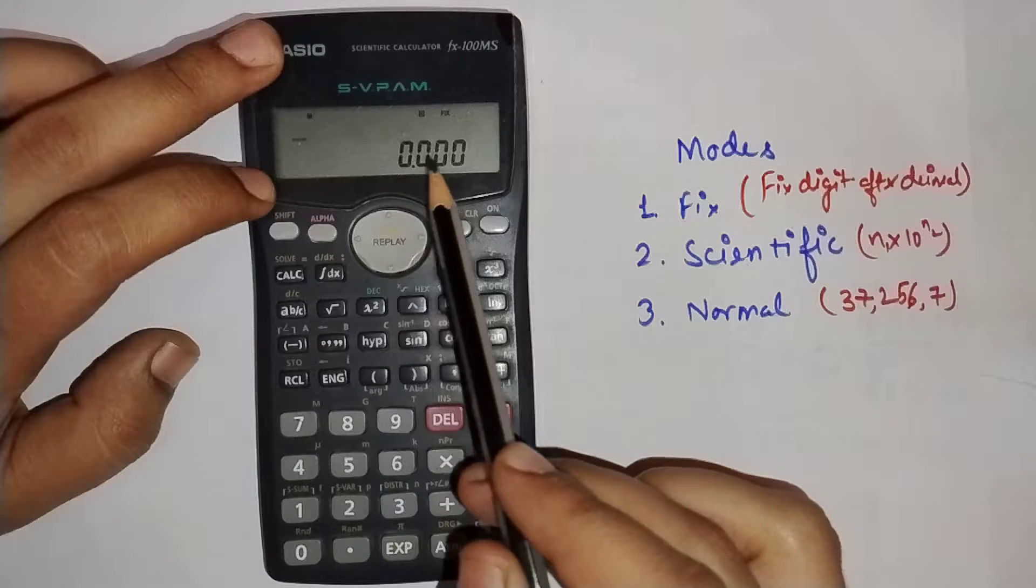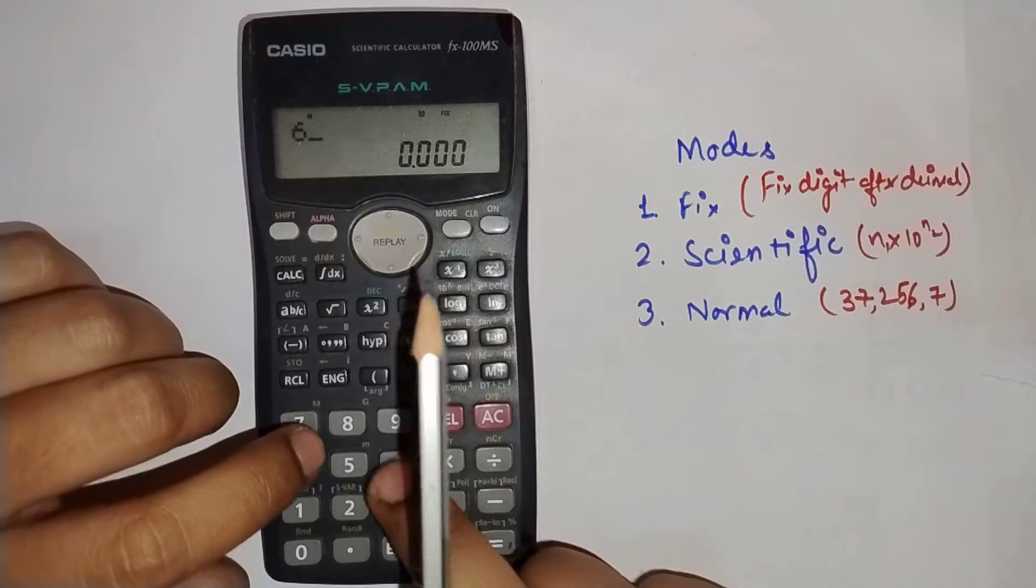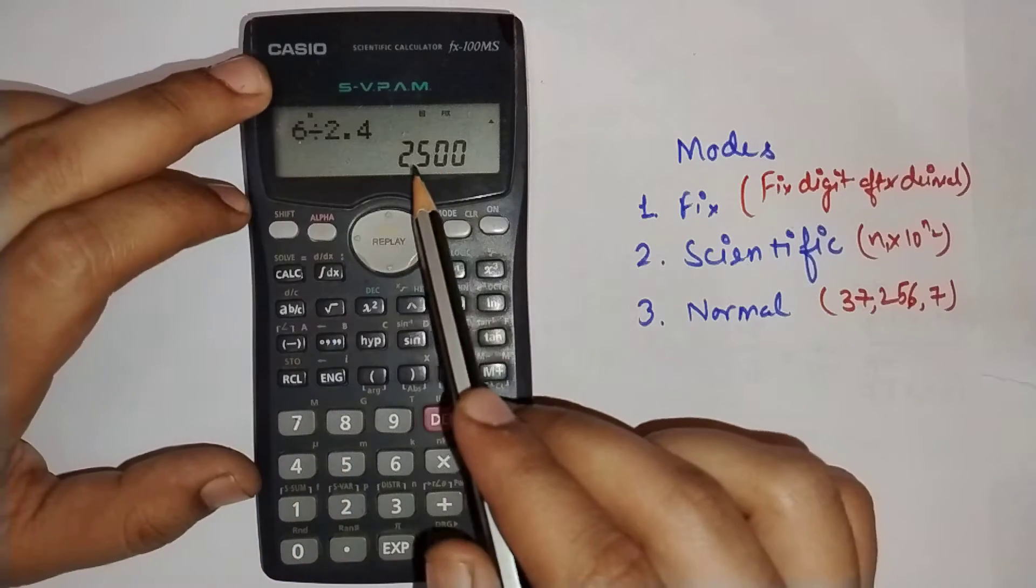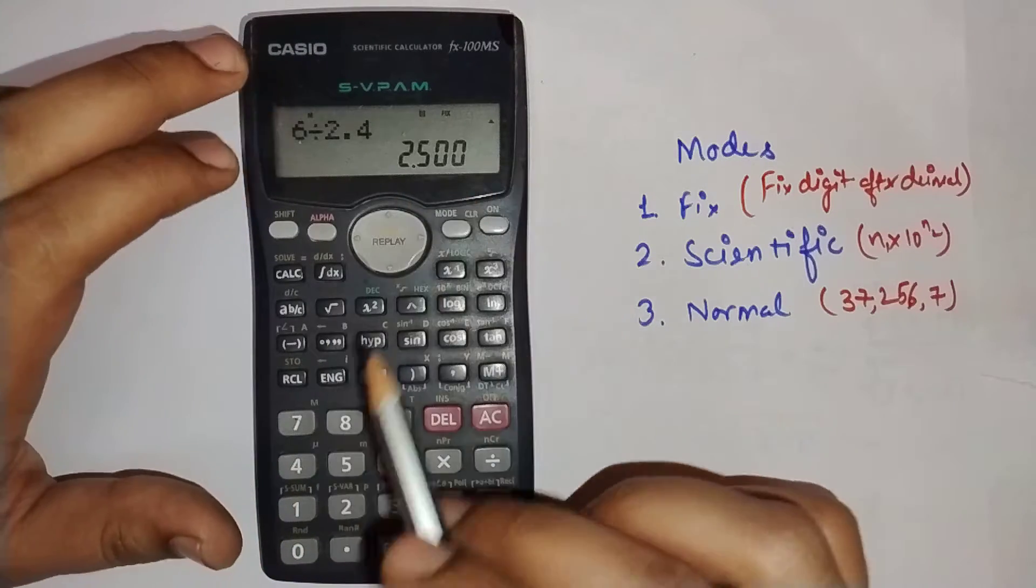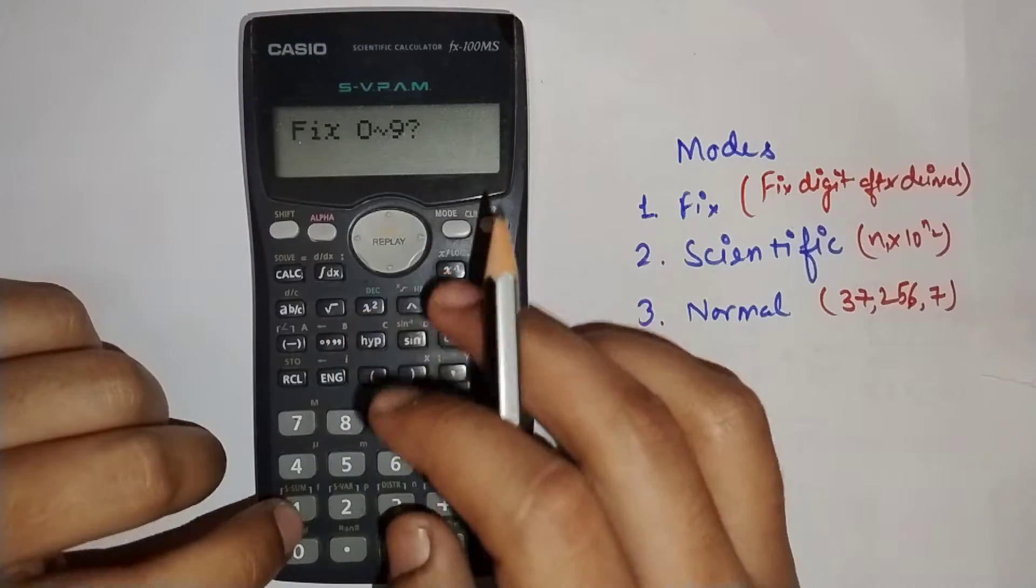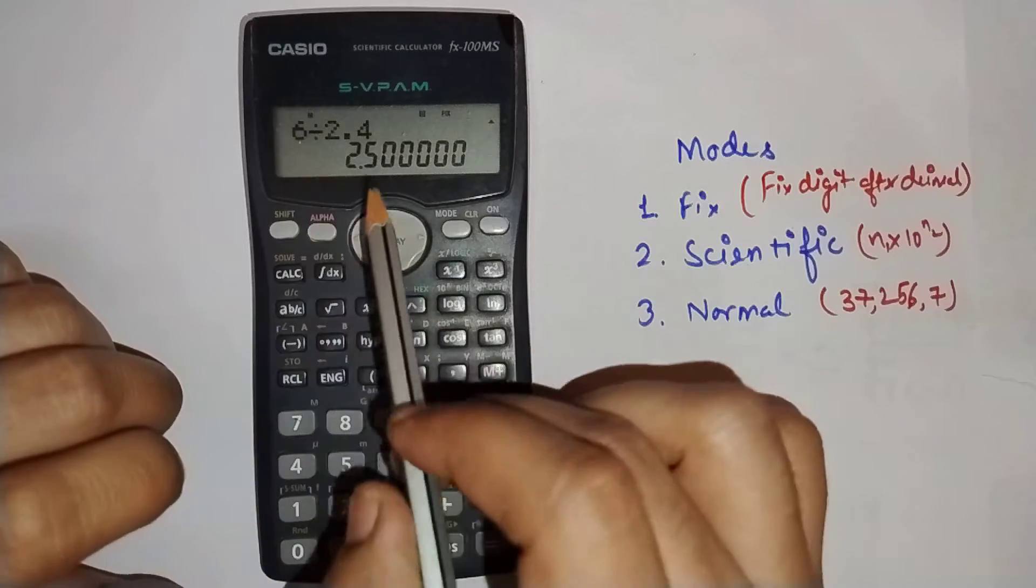You can see that after the decimal there are three digits. If I press 6 divide by 2.4, it gives me 2.500, three digits. If I set fix to 6, it will give me six digits.